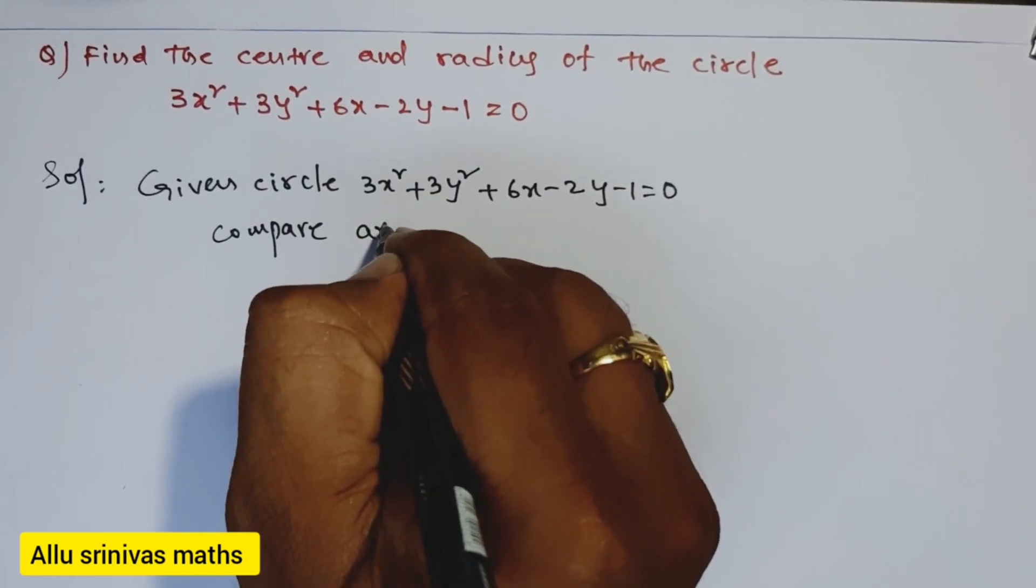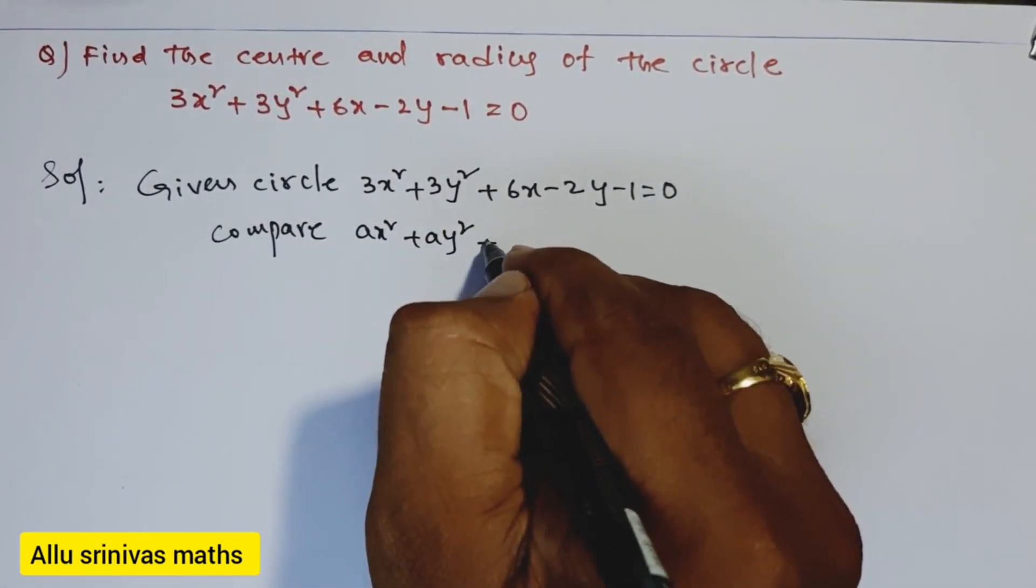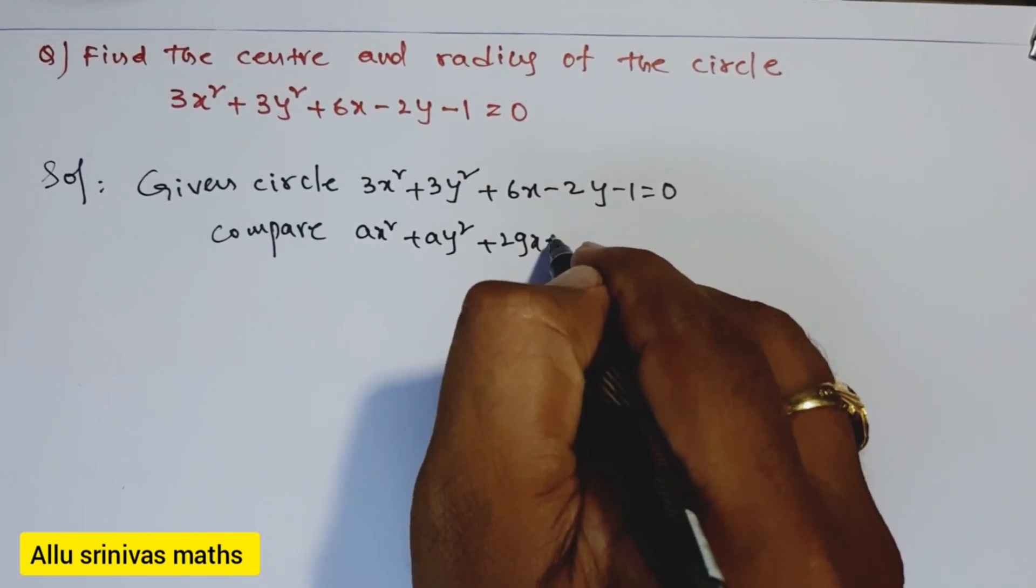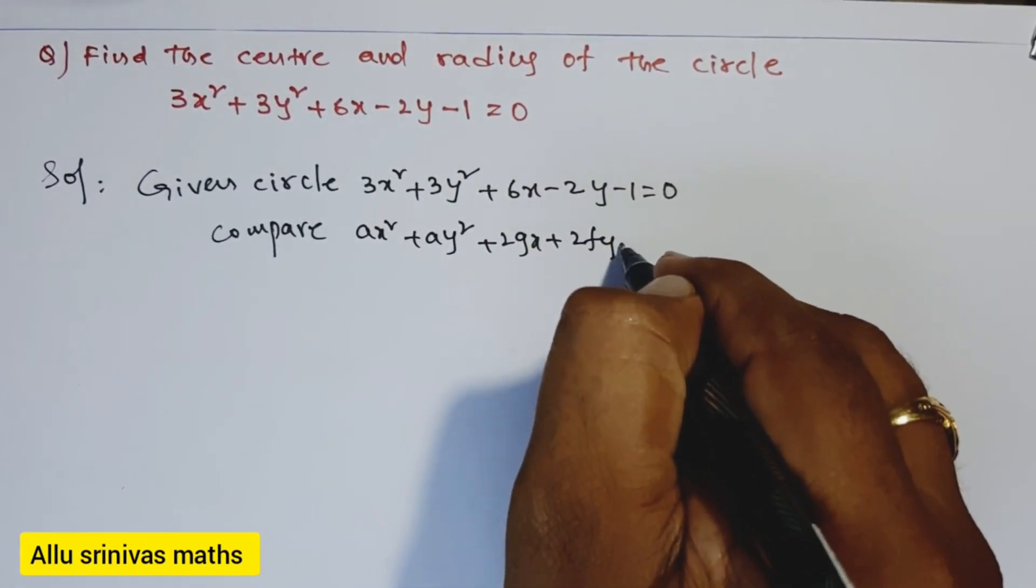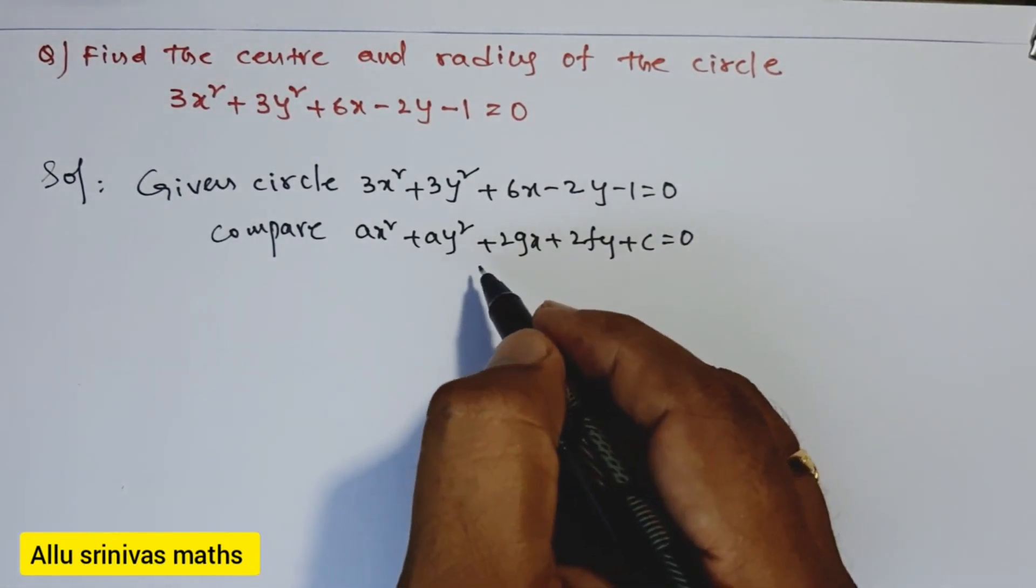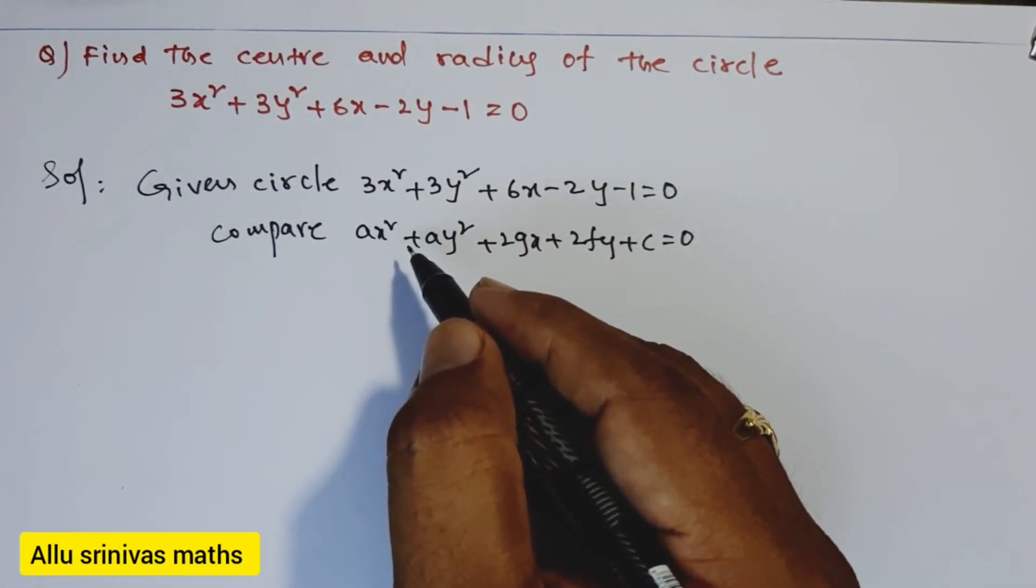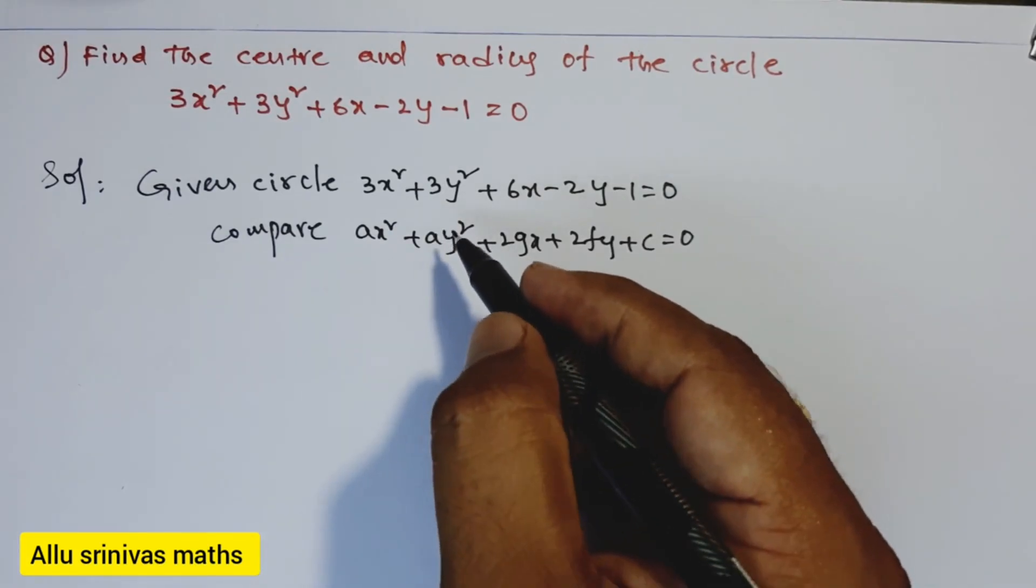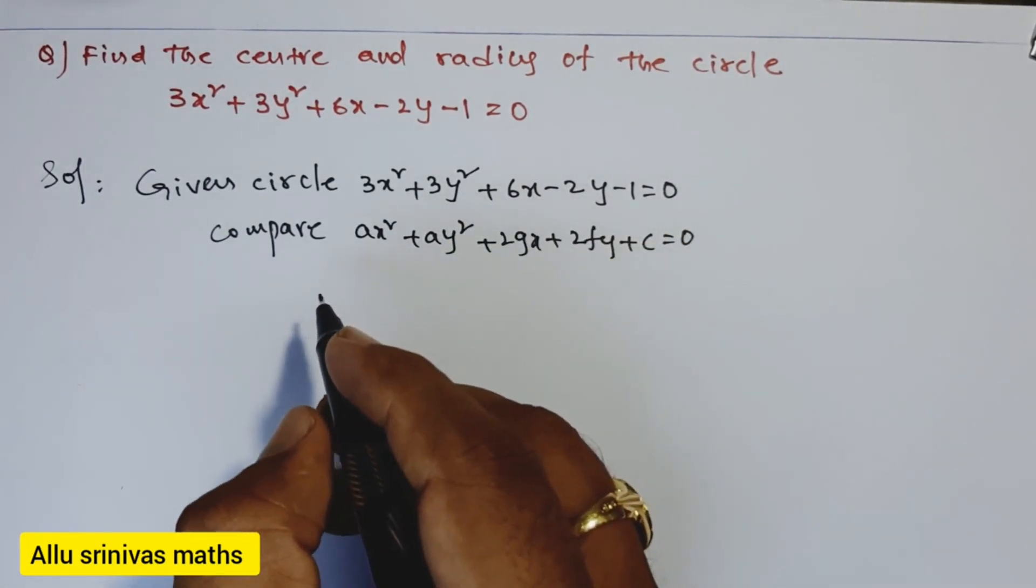The standard form is ax² + ay² + 2gx + 2fy + c = 0. The x² coefficient and y² coefficient are equal because this is a circle; otherwise it's not a circle. So first, we compare the x² terms.